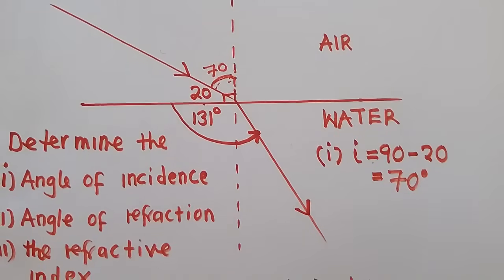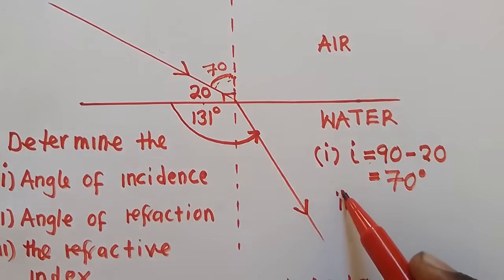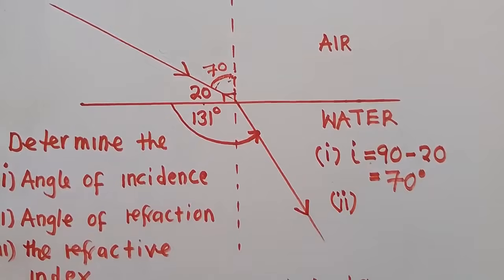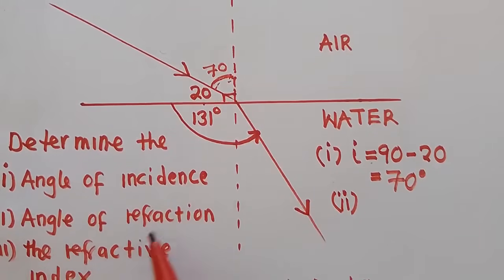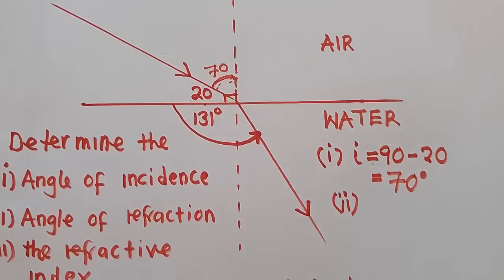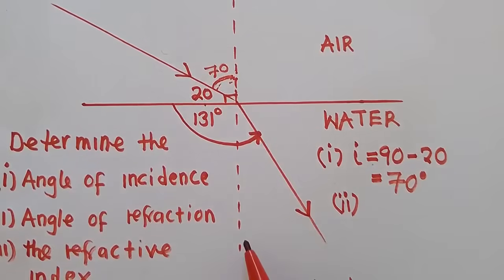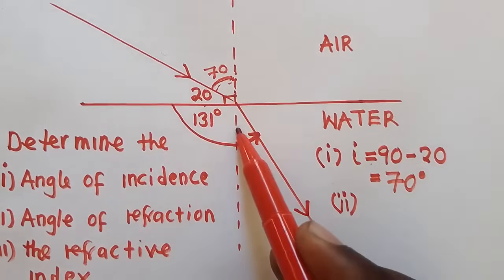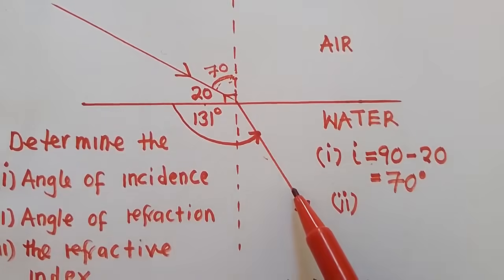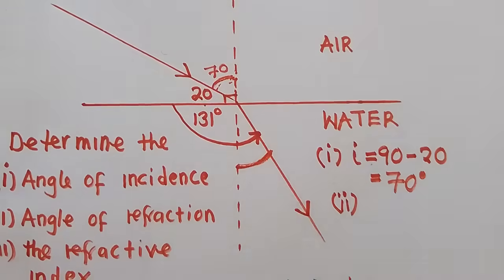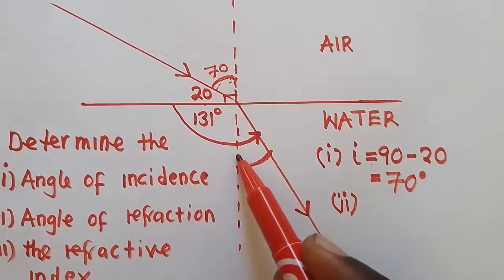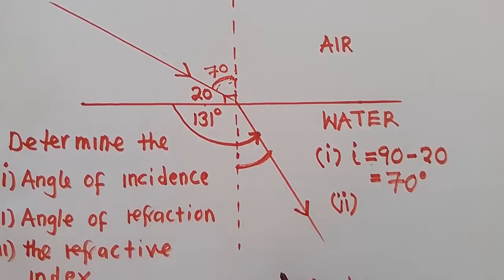We move to question two: determine the angle of refraction. The angle of refraction is found between the normal and the refracted ray. So that is where we find the angle of refraction.